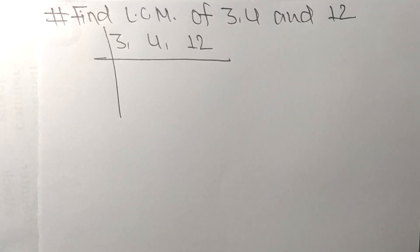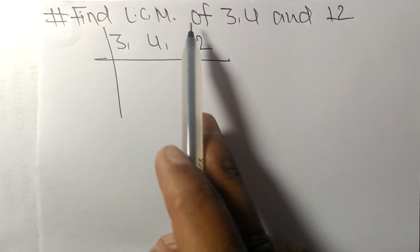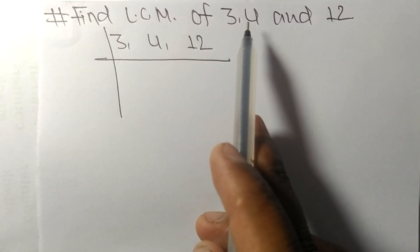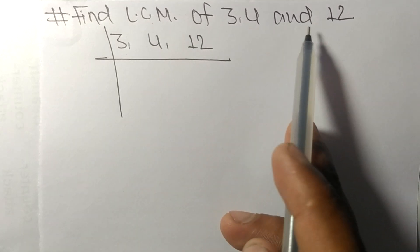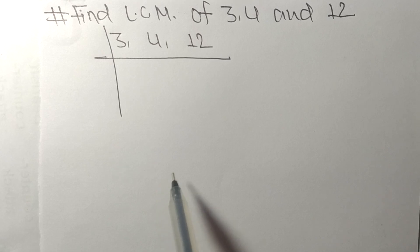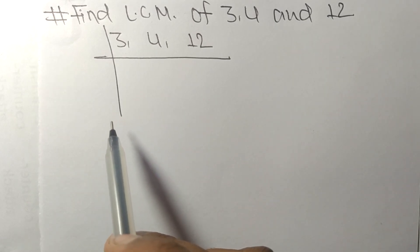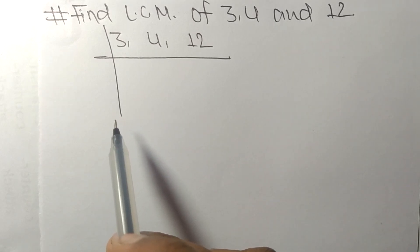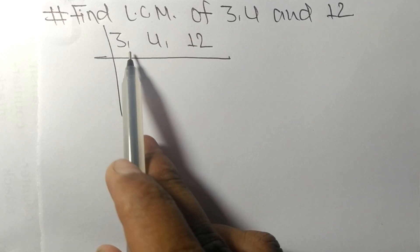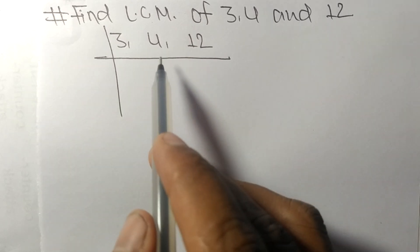Today in this video we shall learn to find the LCM of 3, 4, and 12. To find the LCM, we have to choose the lowest number that can exactly divide at least any two of these numbers.